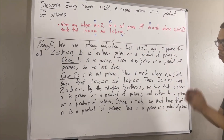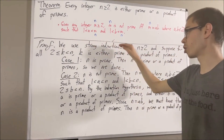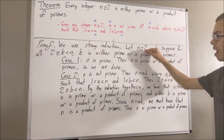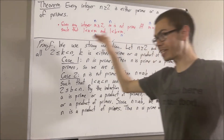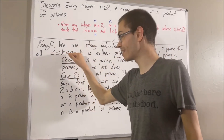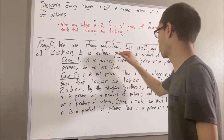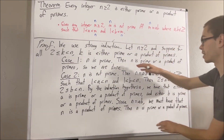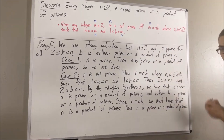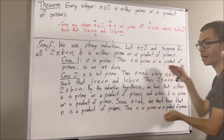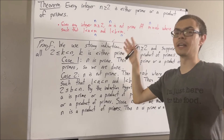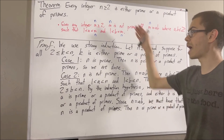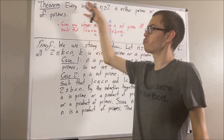Putting this all together: we started by using strong induction, giving ourselves an arbitrary integer n greater than or equal to 2, and supposing that for all integers k greater than or equal to 2 that are less than n, k is either prime or a product of primes. From there, we showed that n must then be prime or a product of primes. Because we've done that, this closes the induction, and we have shown that for all integers n greater than or equal to 2, n is either prime or a product of primes. So we have proven the theorem, and this completes the proof.